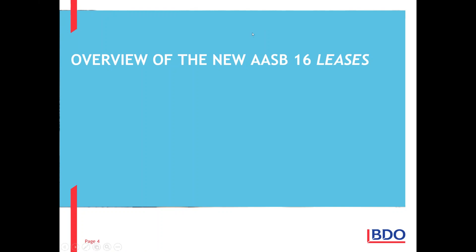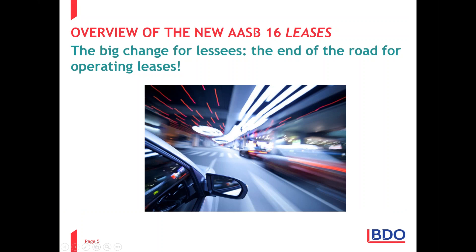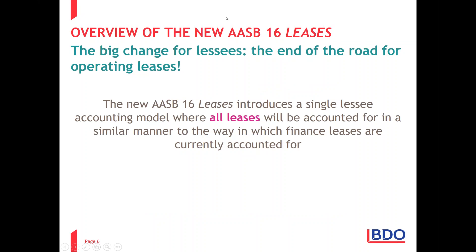The big change under AASB 16 is for lessees — it's the end of the road for operating leases. If you're a lessor, not much is changing. However, if you're a lessee with operating leases, there's a big change. The new AASB 16 introduces a single lessee accounting model where all leases will be accounted for in a similar manner — the way we currently account for finance leases. Going forward, lessors will still distinguish between finance and operating leases.